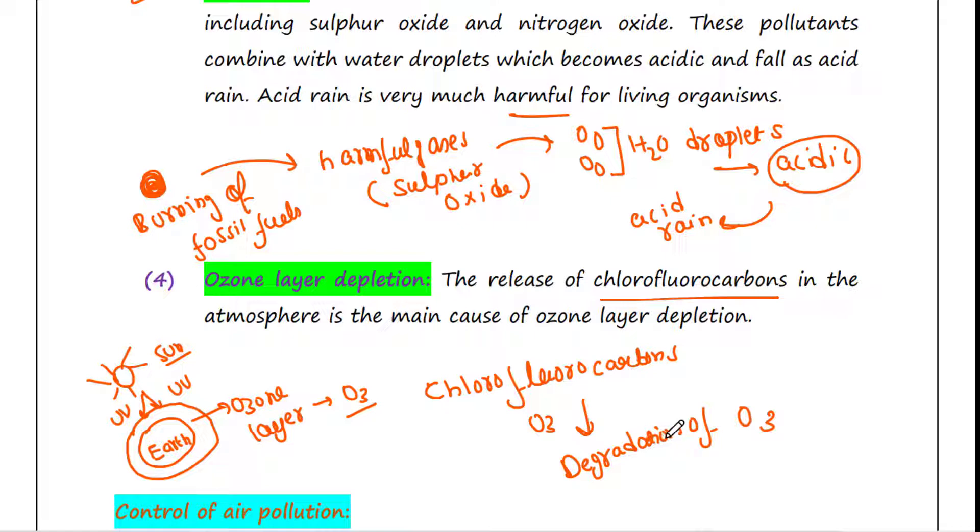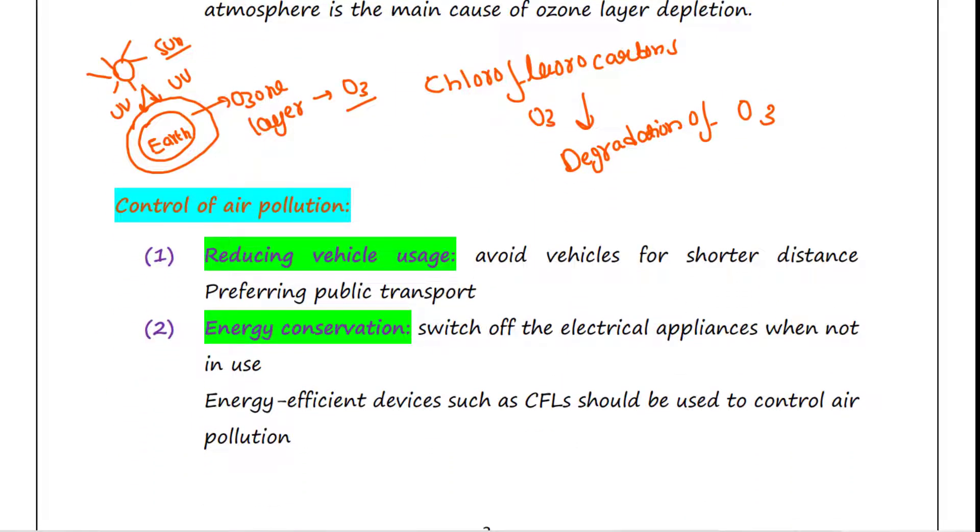Next is control of air pollution. First is reducing vehicle usage. We can avoid vehicles for shorter distances and prefer public transport. Next is energy conservation. Electricity generation requires burning of huge amounts of fossil fuel. Hence, one must switch off electrical appliances when not in use. Energy efficient devices such as CFL should be used to control air pollution.